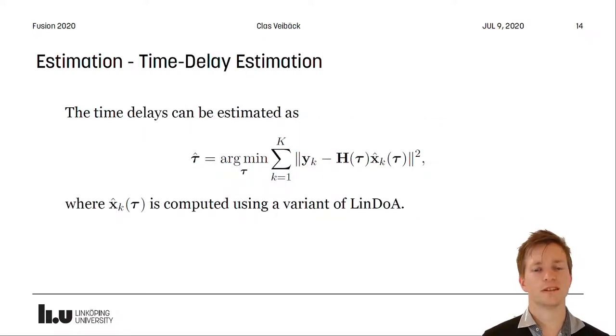So far we assume that the time delays are known. However, we need to estimate those as well and we do that using the optimization problem for minimizing the estimation error squared. Now the X hat in here could be the results of any of the variants of linearized direction of arrival we looked at before.